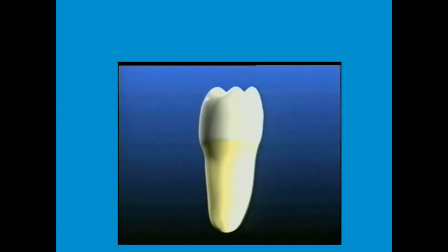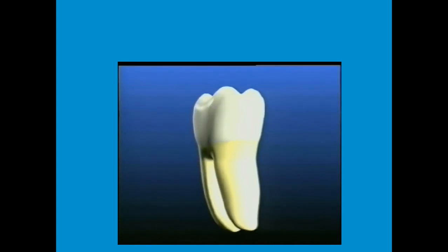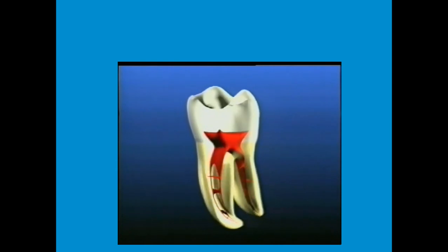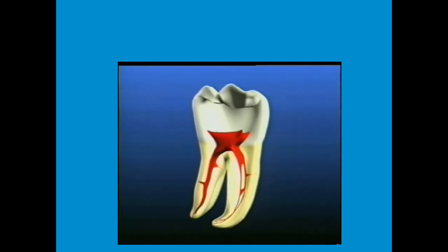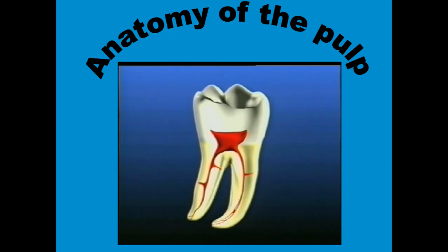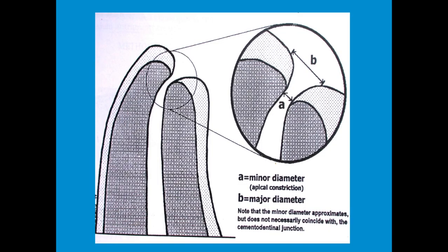Welcome back to the second lecture of anatomy of the pulp. As we have previously discussed, the anatomy of the tooth is very complicated, so you need to have an idea of the anatomy to have a successful endodontic treatment. To sum up what we have previously studied, the terminologies are: anatomical apex, radiographic apex, major diameter, minor diameter, and working length.